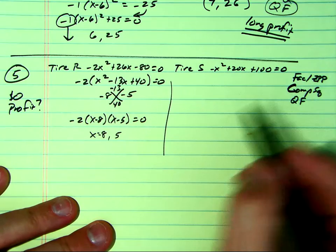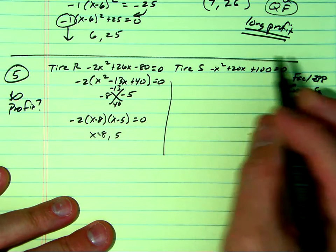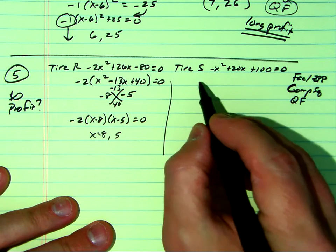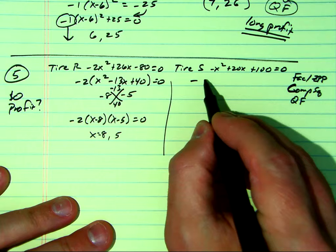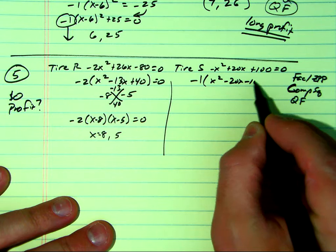That's kind of cool. What about this one? When you see this negative, what should you do? Factor out the negative. So I'm going to make it x squared minus 20x and minus 100.